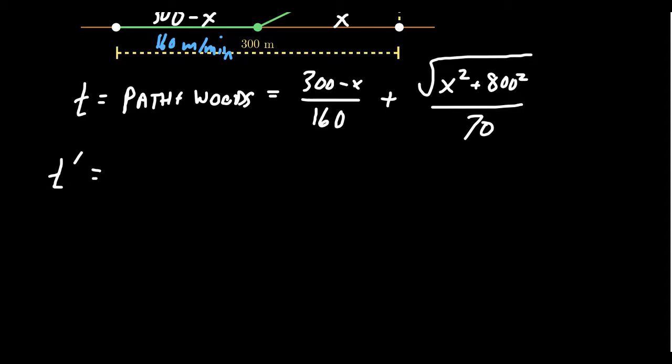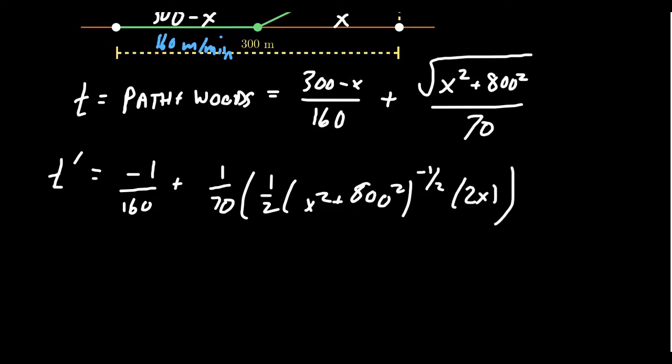If we take the derivative of t with respect to x, we'll get -1/160 plus we're going to get 1/70 times 1/2 times (x² + 800²) to the -1/2 power, and times that by 2x. You'll notice again that this 1/2 cancels with this 2.